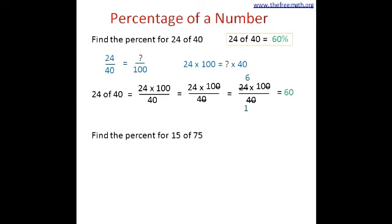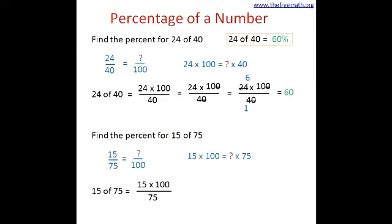Let's take a look at one more example: find the percent of 15 of 75. That means if I have 15 out of 75, what is my percent — that is, it's equivalent to what out of 100. Let's write that in terms of fractions: 15 over 75 is equal to what over 100. Using the cross product: 15 multiplied by 100 is equal to the unknown multiplied by 75. Dividing both sides by 75, we get 15 multiplied by 100 divided by 75.